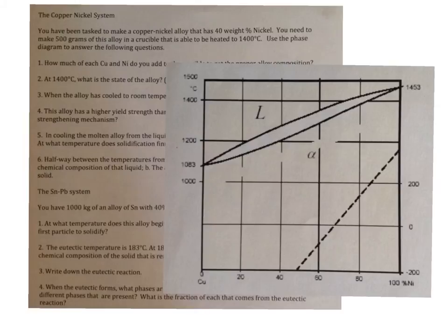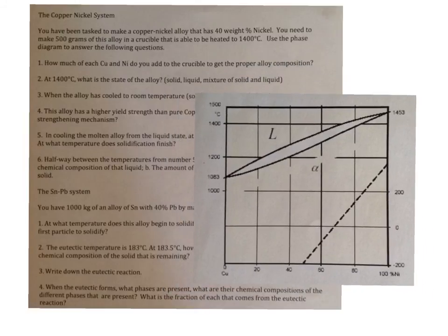So the first question is how much of each copper and nickel do we need to add to the crucible to get to the proper alloy composition? Well, what we want is 40 weight percent nickel. We have 500 grams of the alloy and the temperature is 1400 C. So let's go ahead and indicate that on the diagram here. Here's 1400 C. What we want is this 40 weight percent nickel. So this is what we want as an alloy composition is this line right here.